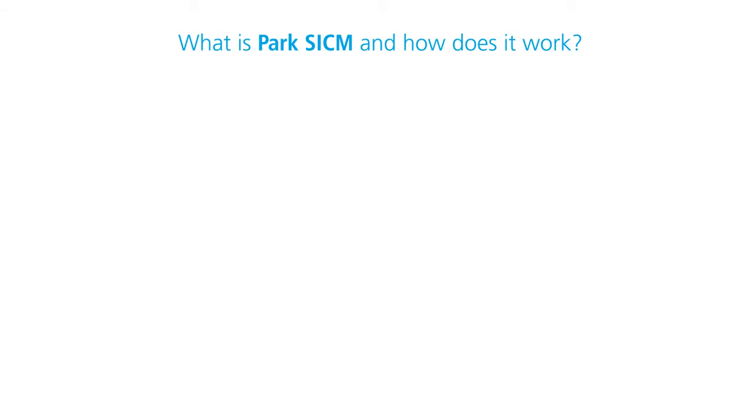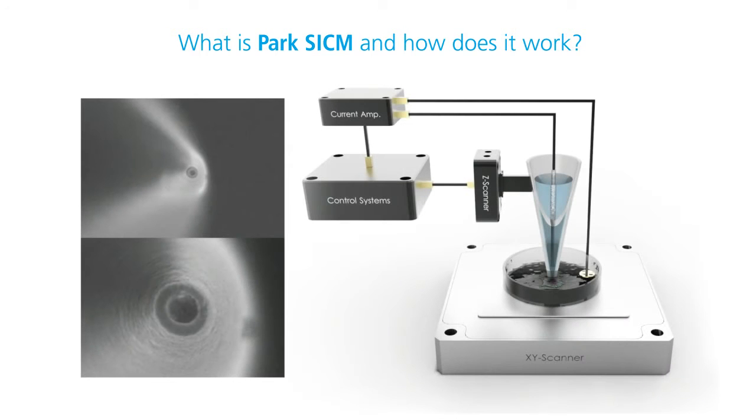So, what is PARC-SICM and how does it work? PARC-SICM uses a glass nanopipet filled with electrolytes that acts as an ionic sensor providing feedback on its tip's location relative to a sample surface completely immersed in liquid.